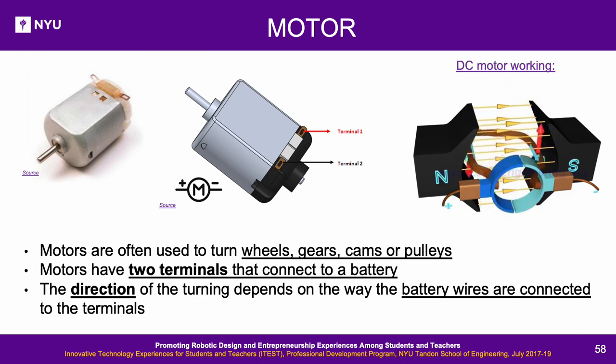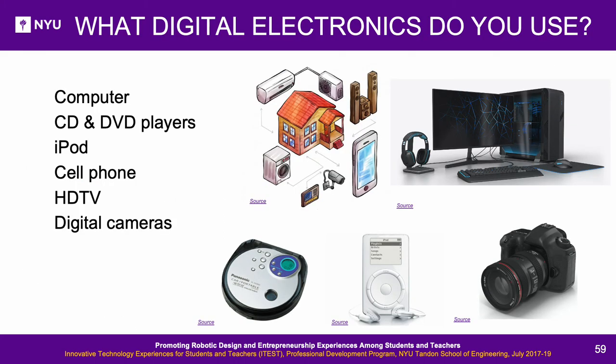A motor is an electromechanical device mostly based on magnets rotating in response to current. Motors have two terminals that connect to a battery, and the direction of rotation depends on how the battery wires are connected. Motors will be discussed in more detail in Lesson 5. Some digital electronic devices popular in everyday life include computers, CD and DVD players, iPods, cell phones, digital cameras, food scales, etc.